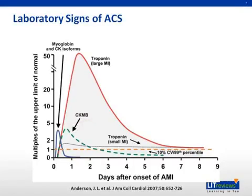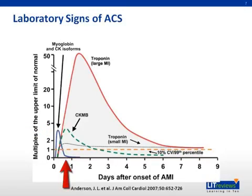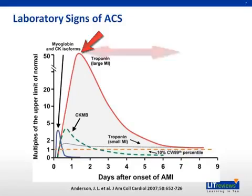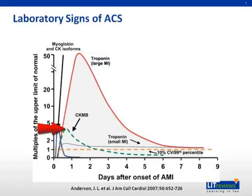These markers vary in their time to peak levels and the amount of time they remain elevated before returning to normal. This graph illustrates that myoglobin is the first marker to peak within two hours and also the first to return to normal within less than 24 hours. Troponin peaks next at 12 to 24 hours and remains positive on average up to 7 to 10 days. CKMB peaks around the same time as troponin at 12 to 24 hours but returns to normal more quickly in 3 to 5 days.